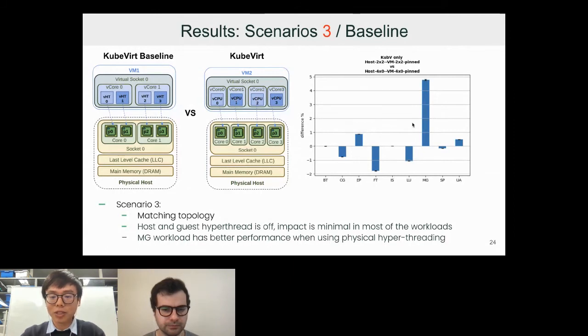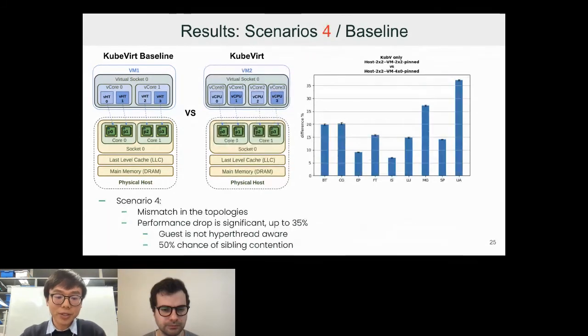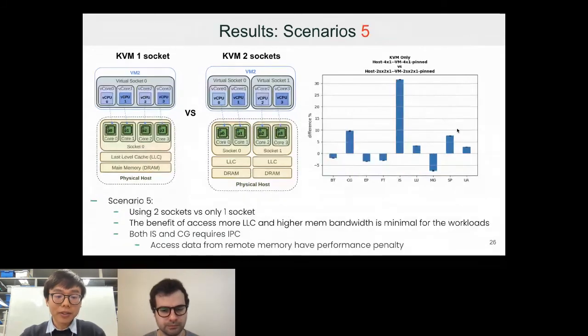Things got really interesting where you have the hyperthreading turned on in the host but turn off the hyperthread inside the VM guest. This is where you have a mismatch in the topology. This is actually a real issue because the guest scheduler is not hyperthread aware, so there is a 50 percent chance that you have a sibling contention. As you can see, the performance drop is quite significant, up to 35 percent.